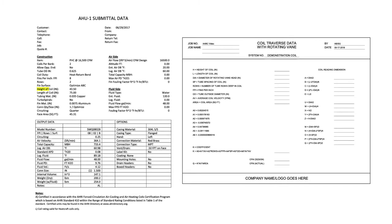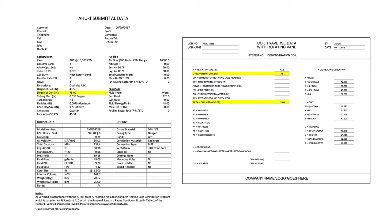From the submittal data, record the height of the coil: H equals height of coil as 43.5. Notice the coil reading dimensions are automatically calculating on the right of the form. From the submittal data, record the length of the coil: L equals length of coil as 75. Notice the coil area is automatically calculated as area equals coil area as 22.66 square feet.